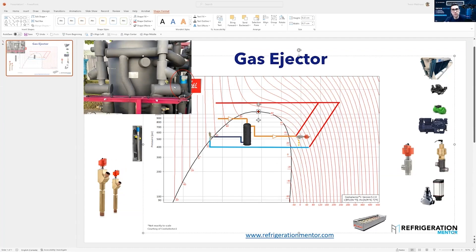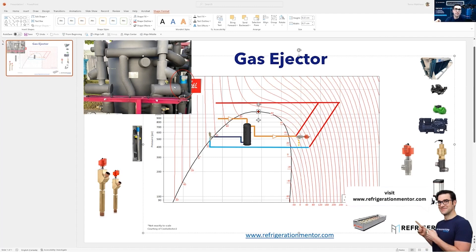What the ejector is doing, once again, is taking the gas coming from the suction line evaporators, the medium temp suction line evaporators, and putting it into the flash tank. Then the flash tank is putting it through the parallel compressor instead of going into the medium temp compressors.